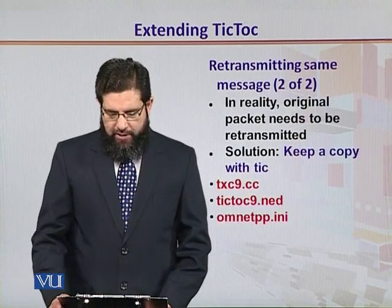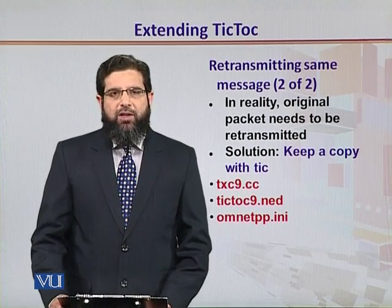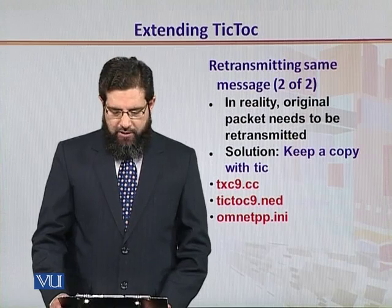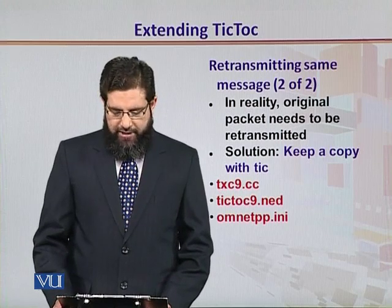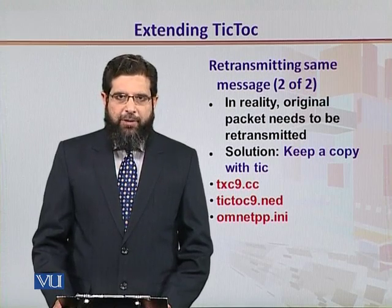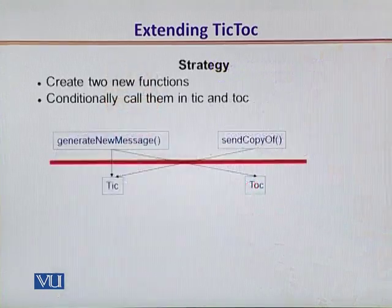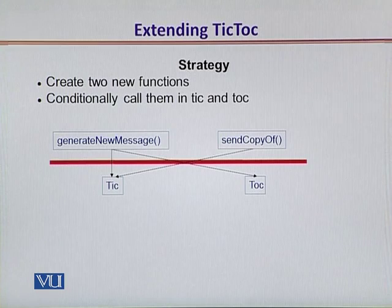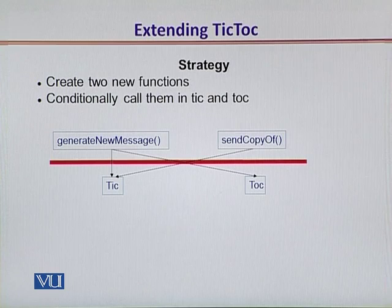So we are going to propose a solution. Whenever transmission takes place at TIC, it is going to keep a copy of the packet that is just transmitted. Let's look at a strategy that we devise — how to differentiate between a fresh packet transmission and a copy transmission. For that, we need to create two new functions, namely, generateNewMessage and sendCopyOf. We are then going to conditionally call either or both of these functions depending upon the need, both in TIC and TOC.